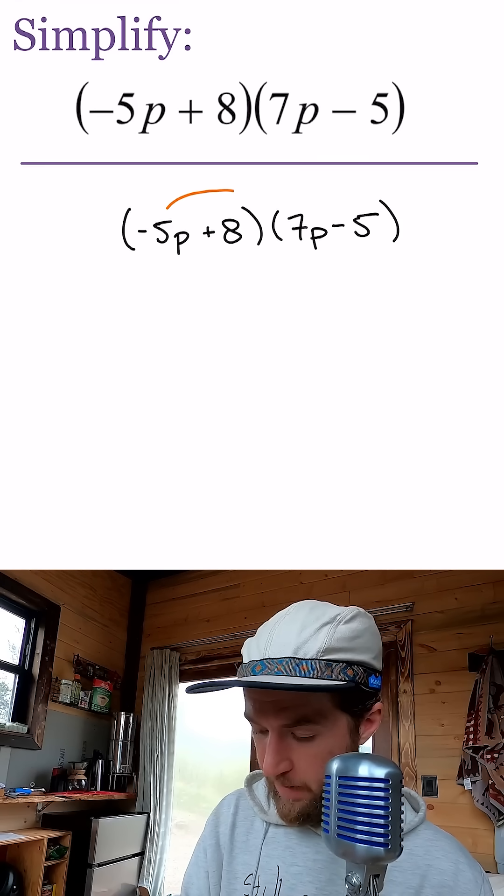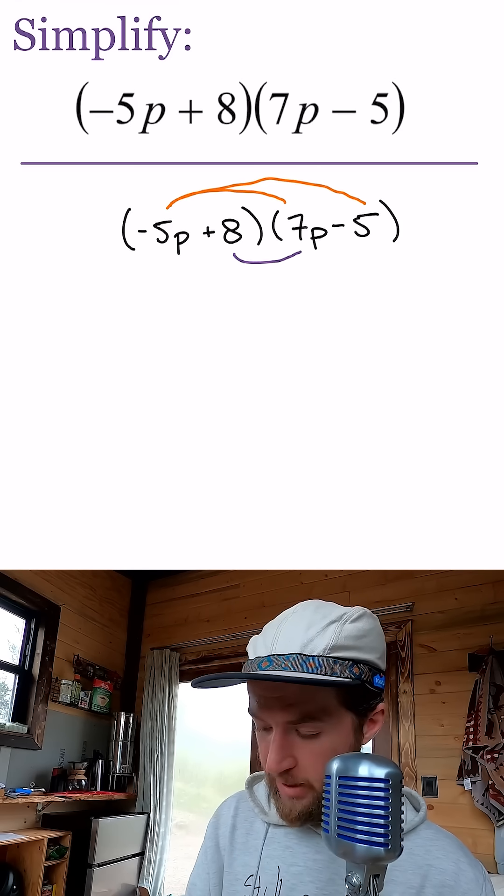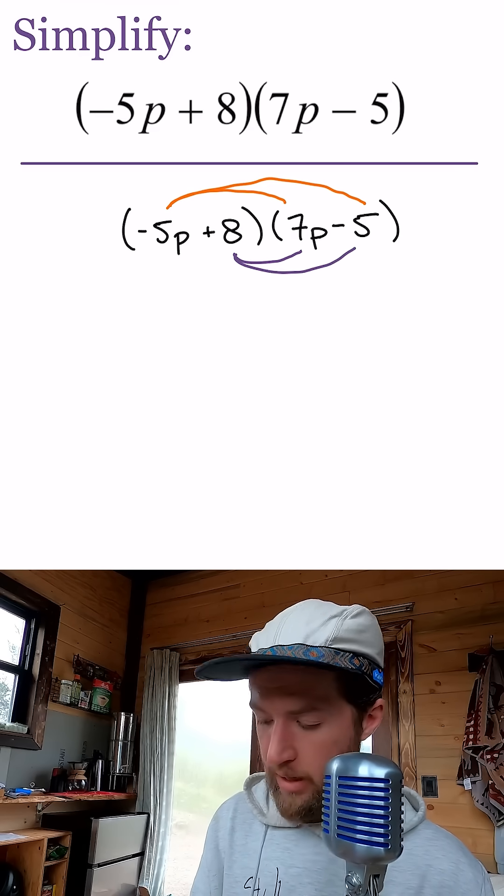We're going to multiply the negative 5p to the 7p, as well as the negative 5. We're also going to multiply the 8 to the 7p and the negative 5.